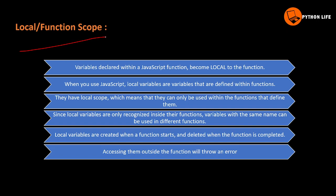Variables declared within a JavaScript function become local to the function. Inside the function, we declare variables — those are local variables. Local scope is accessible only within that function. Local variables are variables defined within functions and can only be used within the functions that define them. Variables with the same name can be used in different functions.